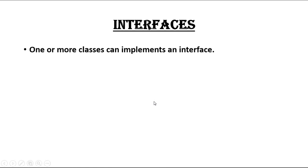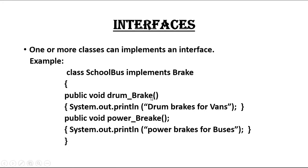A normal class can implement an interface. In the same program, multiple classes can all implement the same interface. Here is a complete example: a class named 'SchoolBus' implements the 'Break' interface and provides implementations for both abstract methods — 'drumBreak' and 'powerBreak' — by specifying a body for each.